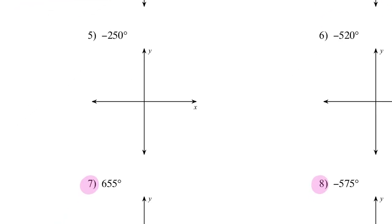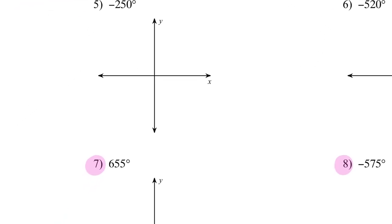A negative angle opens downward instead of upward. For negative 250 degrees: initial side in standard form on the x-axis, but now my angle opens going down. I get negative 90, then negative 180, and I'm missing around 70 more, so the terminal side should be close to the y-axis. My arrow goes down and that gives me negative 250 degrees.